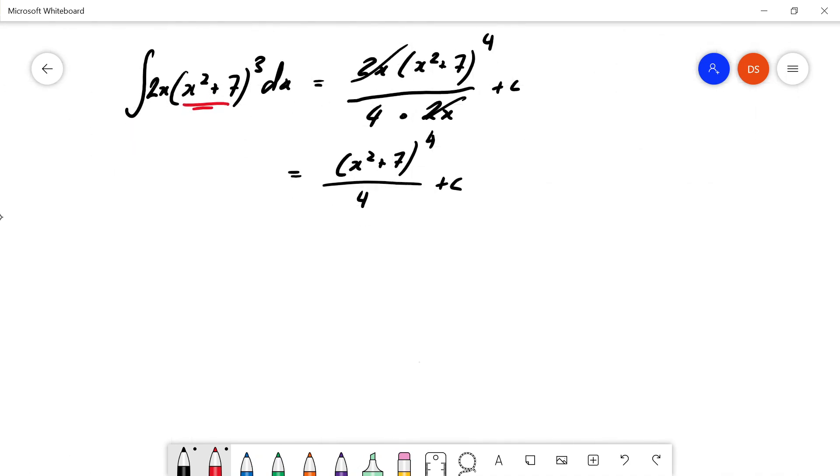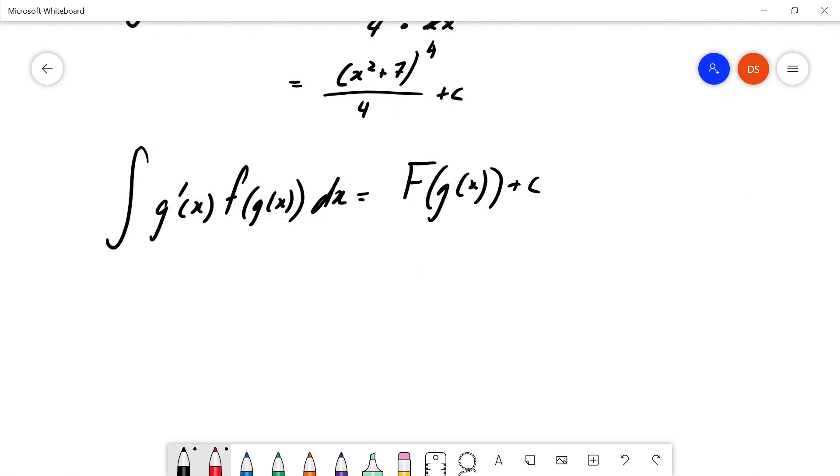Let's use functional notation to write this. We get g dash of x times f of g of x dx and the integral is just the integral of f of g of x plus C.